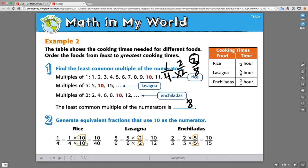Here we have another quick little question. It states, The table shows cooking times needed for different foods. Order the foods from least to greatest. So we want least to greatest cooking times. So we need to figure out which of these fractions is the smallest and up to the biggest sizes. As we look at one-fourth, five-sixths, and two-thirds, we can compare some of their multiples.